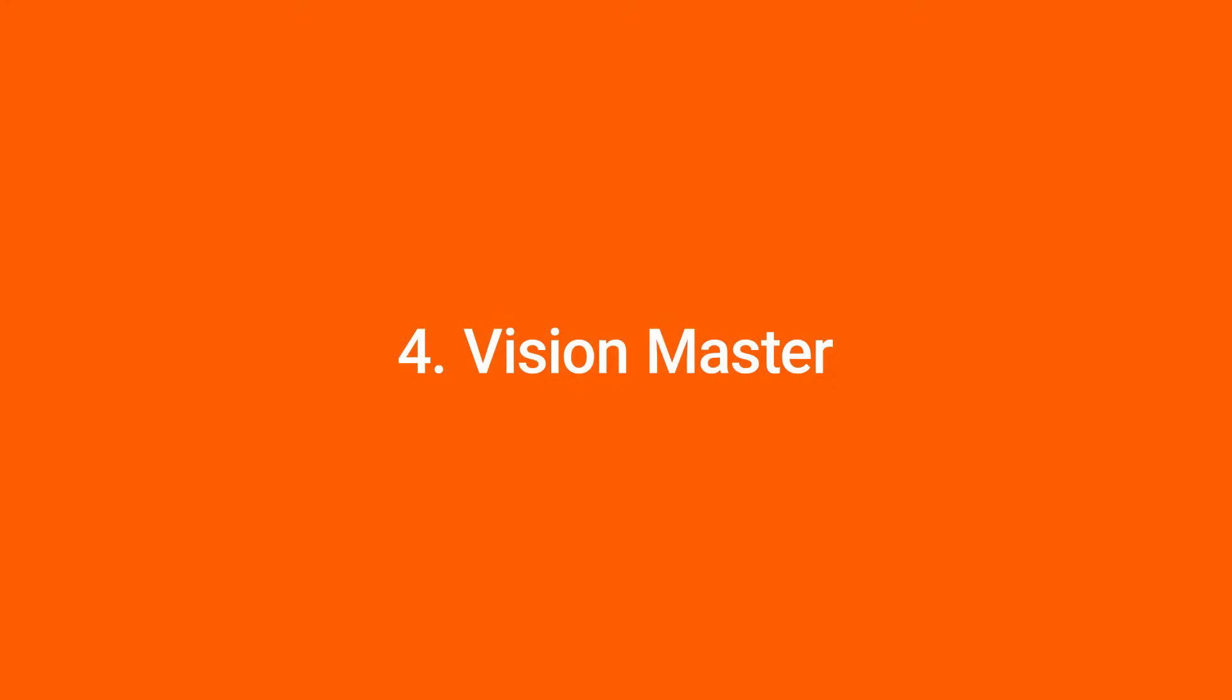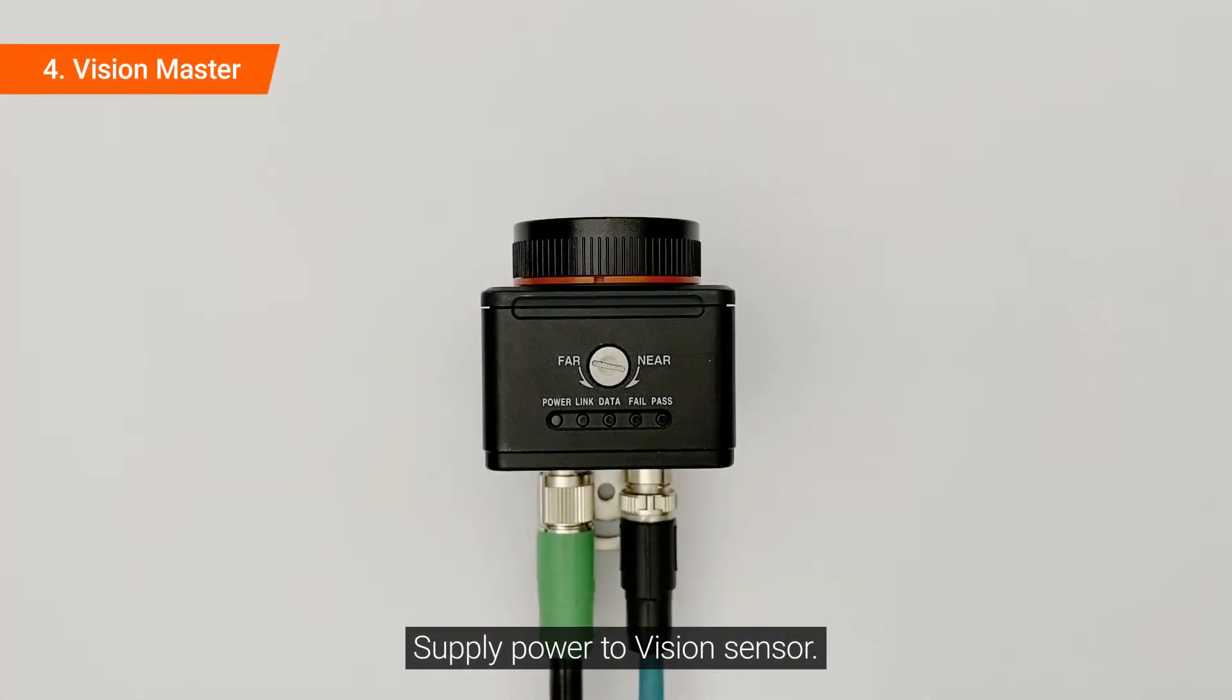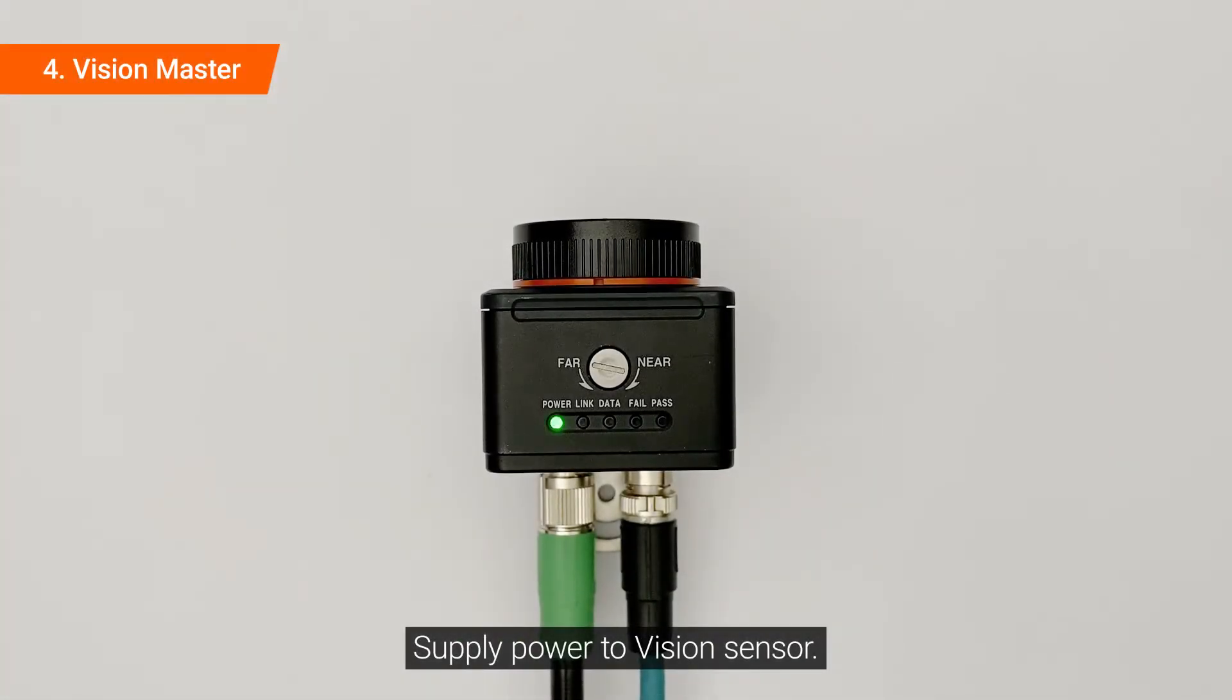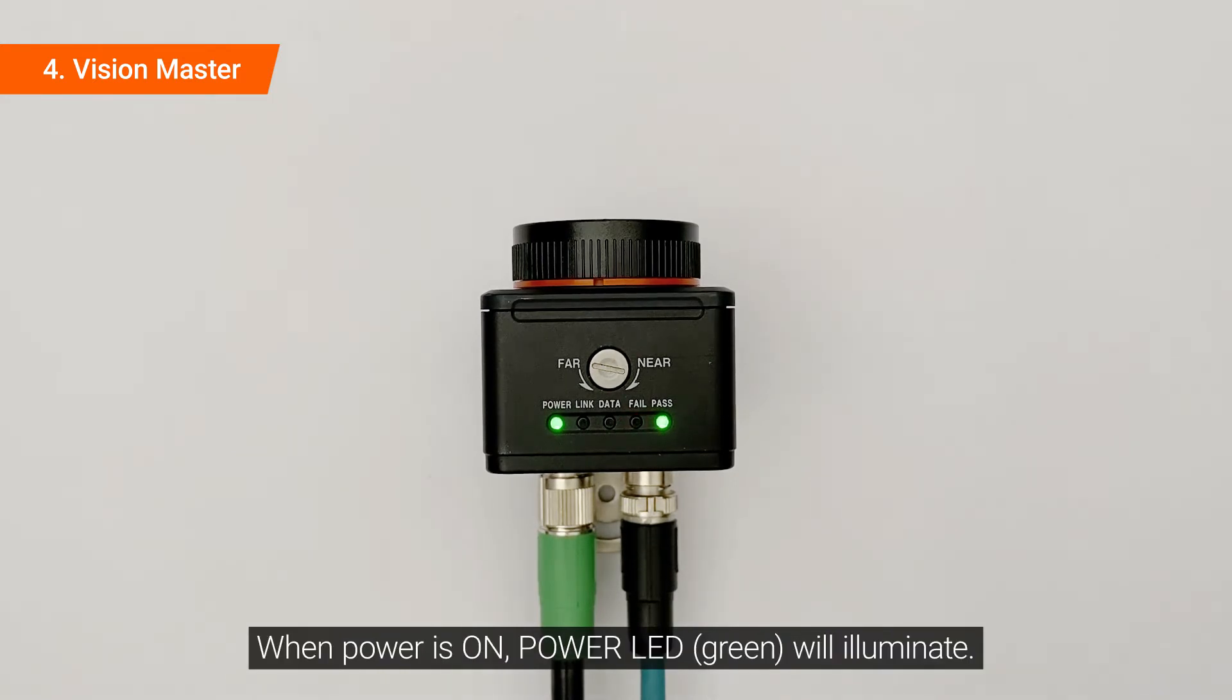Connect the blue wire to the LED. Supply power to the vision sensor. When power is on, the power LED will illuminate.